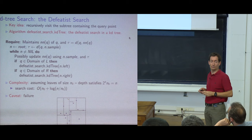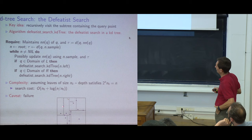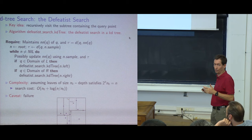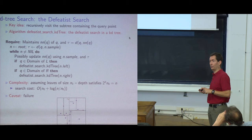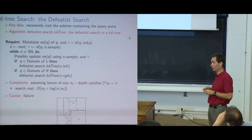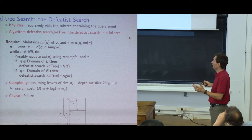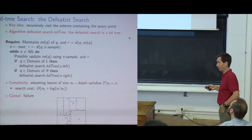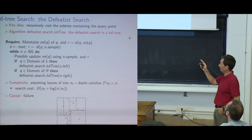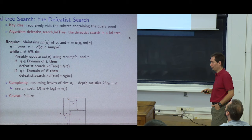The approximation ratio between the wrong answer and the true nearest neighbor may not be bad — especially in high dimensions due to distance concentration. This is one reason approximate nearest neighbor queries are often valid. But if you need the exact nearest neighbor, the defective search can be fooled from the very root. Still, it will be critical as a building block for the best solutions using random forests.